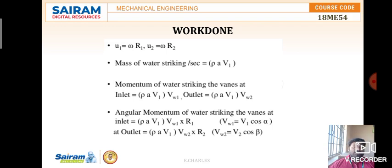Based on the velocity triangle, vw1 equals v1·cos(alpha) and vw2 equals v2·cos(beta). These whirl velocity components vw1 and vw2 are taken from the velocity triangle.